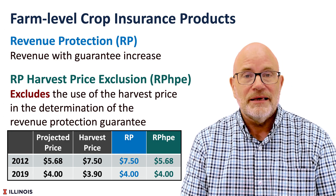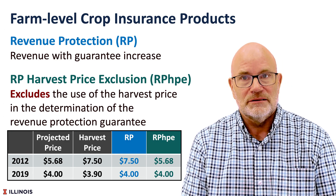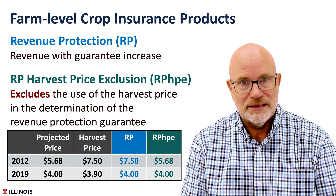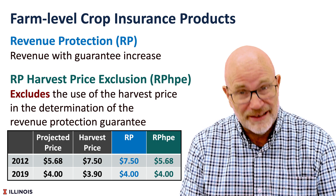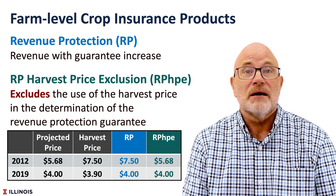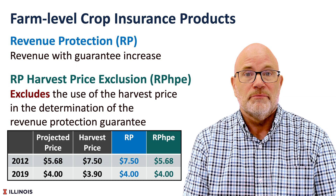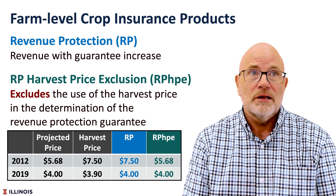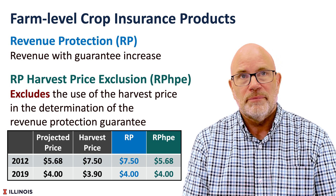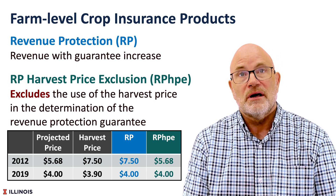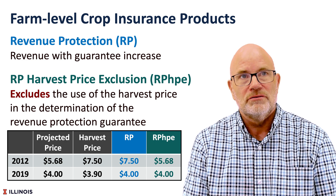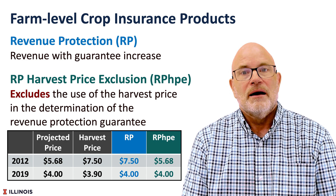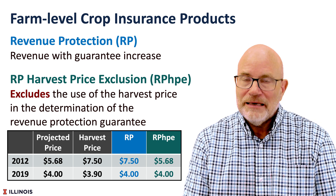RP has a guarantee increase built in, and that guarantee increase will happen when the harvest price is above the projected price. On the other hand, RP with harvest price exclusion does not include that harvest price in its guarantee increase.